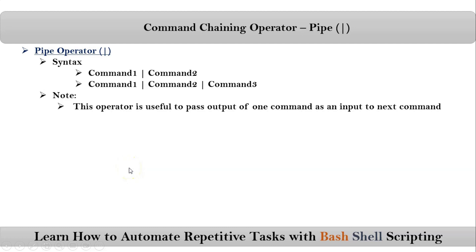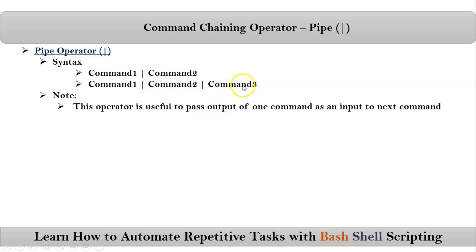Then how is it going to work? This operator is useful to pass the output of one command as an input to the next command. With the first syntax, command one's output will be passed to command two as an input using this pipe. Then command two's output will be passed as an input to command three using this pipe operator. Likewise it works.